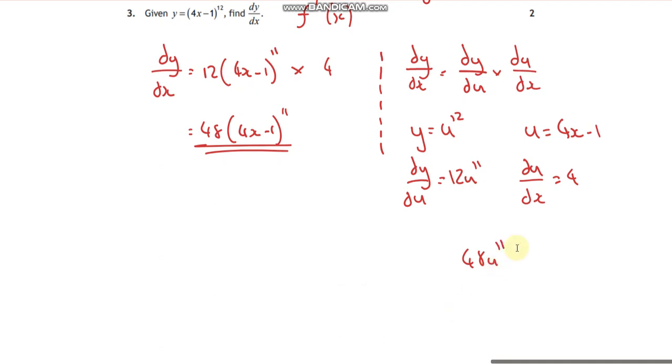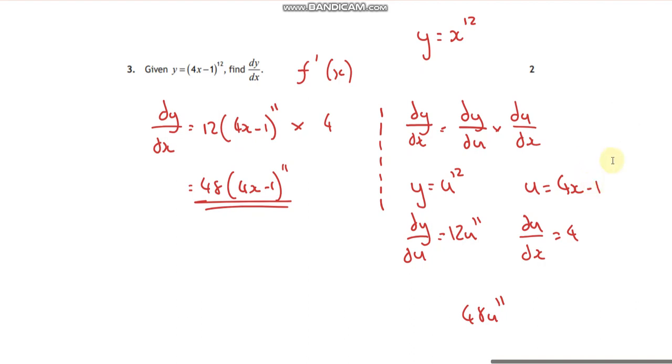Then what do I do here? I multiply them together. So I'm saying I've got 48u to the 11, which if you take your bracket, put that in, you get the same answer. So when you do this, you can tell yourself the little story. That's absolutely fine if you forget.